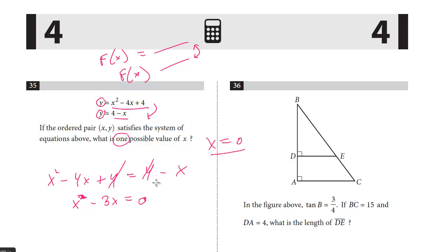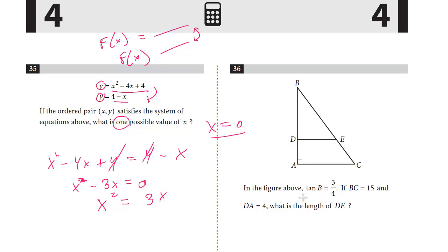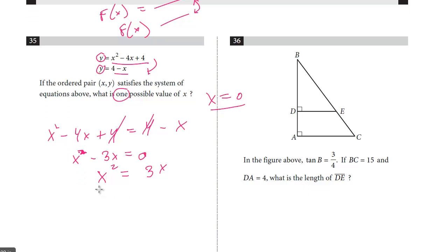Now, the other way to do it is you could move the variables on opposite sides. So what I mean by that is the 4s are going to cancel out, but we're going to add 4x to both sides. And so we get x squared equals 3x. And now what we can do is we can divide both sides by an x.